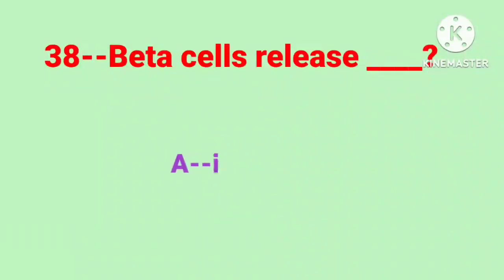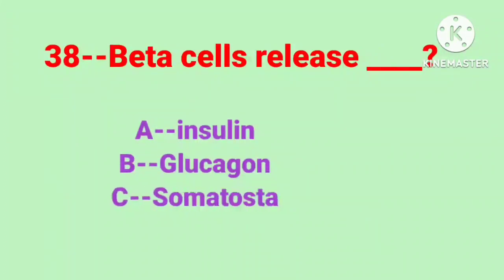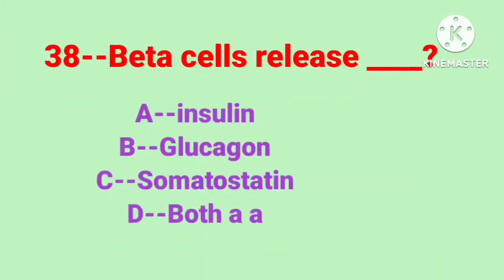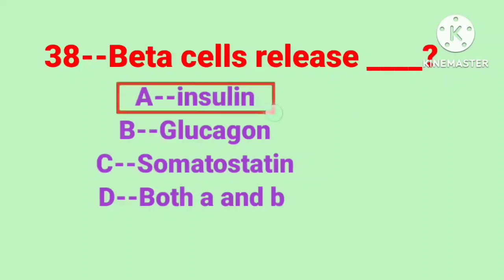Question number 38: Beta cells release. Option A: insulin, B: glucagon, C: somatostatin, D: both A and B. Correct answer is Option A: insulin.